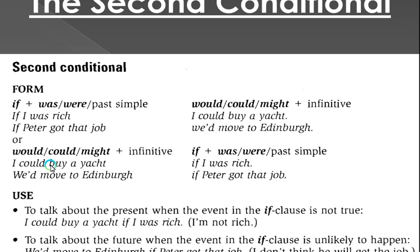Now look at the usage. The first usage is to talk about the present when the if-clause is not true. For example: 'I could buy a yacht if I was rich' — but in fact, this person is not rich. We use the second conditional in the present, but we are just making imagination. In fact, it's not true — we just imagine what we want to be.